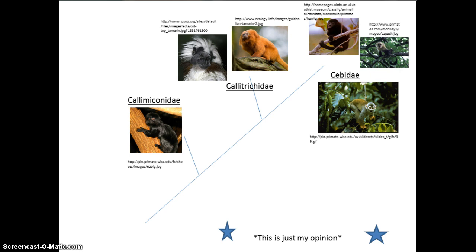Personally, after all the evidence presented, I believe the Calamico represents an older branch than the Callitrichids, one that broke off earlier from the Cebids. Because of this, I believe it deserves its own family, Callimiconidae.